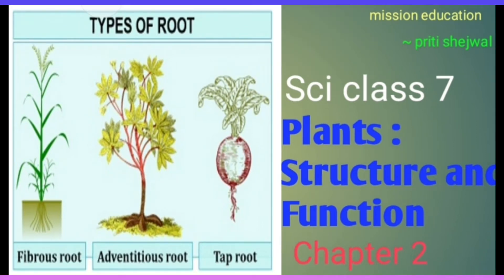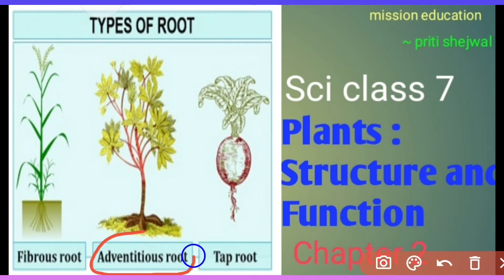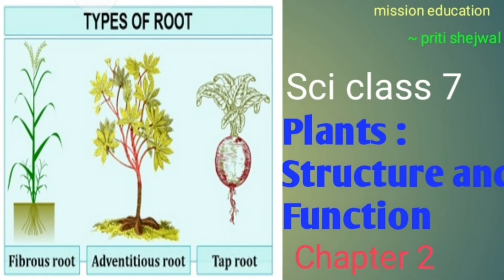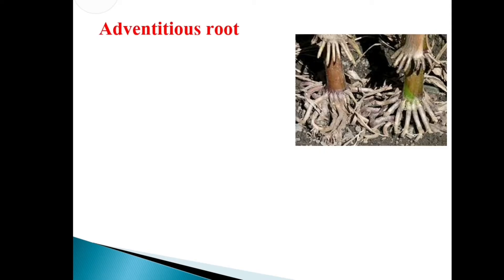So let's start. Today we will learn the third type of root system, which is adventitious root. There are three types of root system: tap root, fibrous root, and adventitious root. I have already discussed tap root and fibrous root — you can click the link in the description box. Now let's study adventitious root.